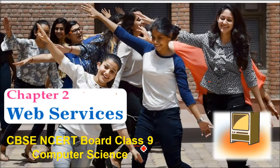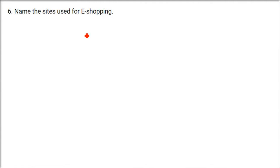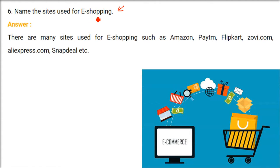This is chapter number two, web services, class 9 computer science. We are taking question and answer. Name these sites used for e-shopping. Shopping online or shopping on the internet is e-shopping — electronic shopping.